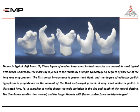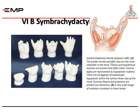The thumbs in typical cleft hand are smaller than normal, and longer thumbs with flexion contractures are triphalangeal. Type six-B is symbrachydactyly: the broader thumb and fifth rays are the most complete. Thenar and hypothenar muscles are present but often very small. Central digits are represented by hypoplastic nubbin remnants, and there are all degrees of metacarpal hypoplasia within the central three rays of the hand.